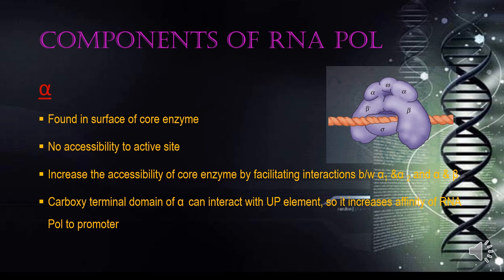The first component of RNA polymerase is alpha. Alpha is found on the surface of the core enzyme and has no accessibility to the active site of the enzyme. Alpha can increase the accessibility of the core enzyme by facilitating interaction between alpha-1, alpha-2, and beta. There are two forms: alpha-1 and alpha-2. The carboxy-terminal domain of alpha can interact with the upstream promoter element, which increases the affinity of RNA polymerase to the promoter.